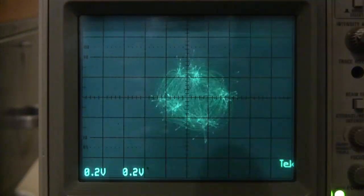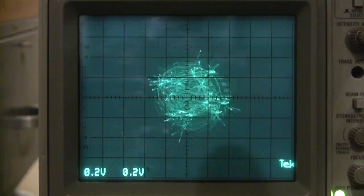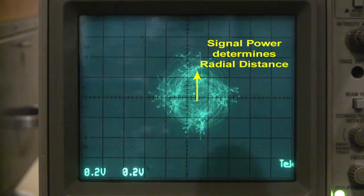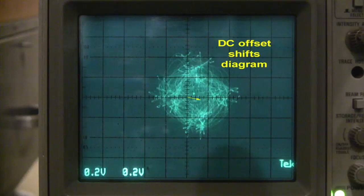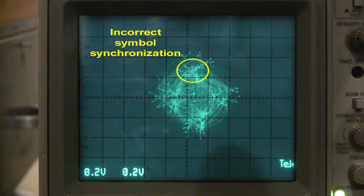A constellation diagram is an intuitive way to view a signal that is displayed in quadrature format, also called I and Q format. A lot of information is available in a constellation diagram and this information can help you troubleshoot a wireless link. In this 4 QAM constellation diagram we can see that the signal power determines the radial distance from the center of the diagram to a constellation point. A DC offset in the received signal will shift the constellation away from the origin, and a cloud will form if the received symbols aren't close to the correct location at the symbol timing instant.